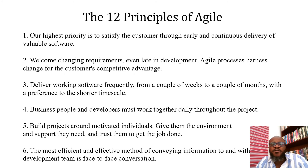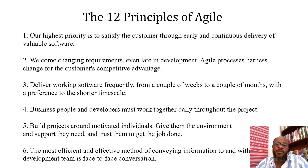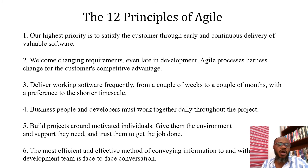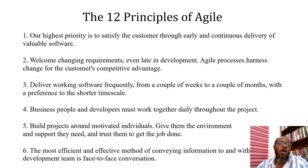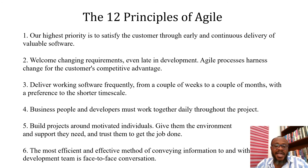Out of these four values of the Agile Manifesto, 12 principles were also generated. You can see the right alignment since they came from the Agile values. Number one: our highest priority is to satisfy the customer through early and continuous delivery of valuable software. Number two: welcoming change in requirements even late in development — Agile processes harness change for the customer's competitive advantage. Number three: deliver working software frequently, from a couple of weeks to a couple of months, with a preference to the shorter timescale. As we proceed, you'll see how these frameworks respond to these principles.